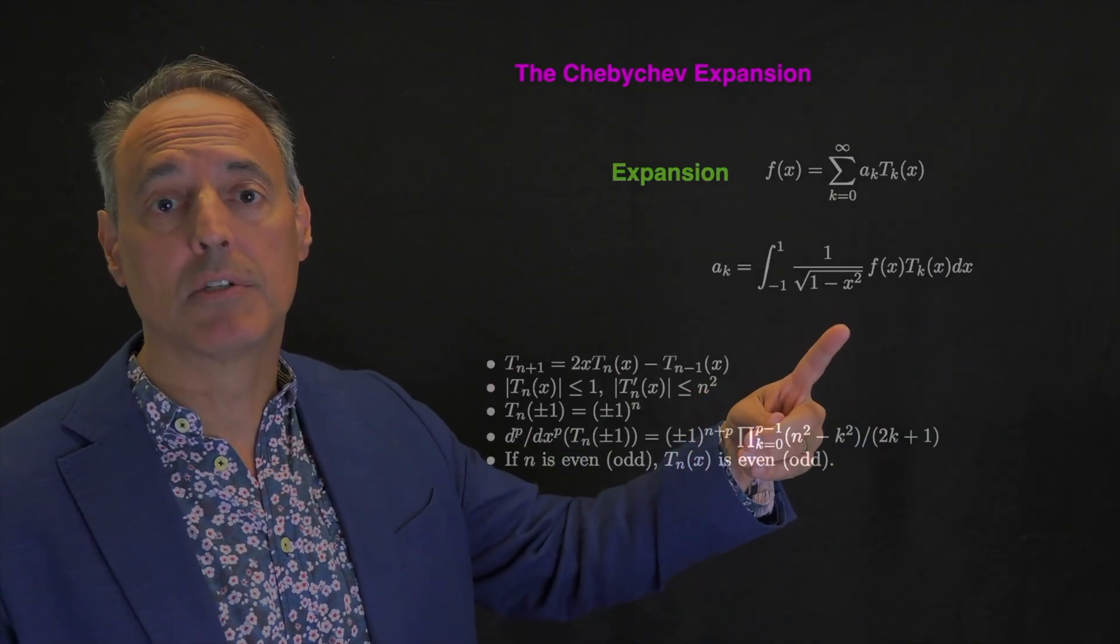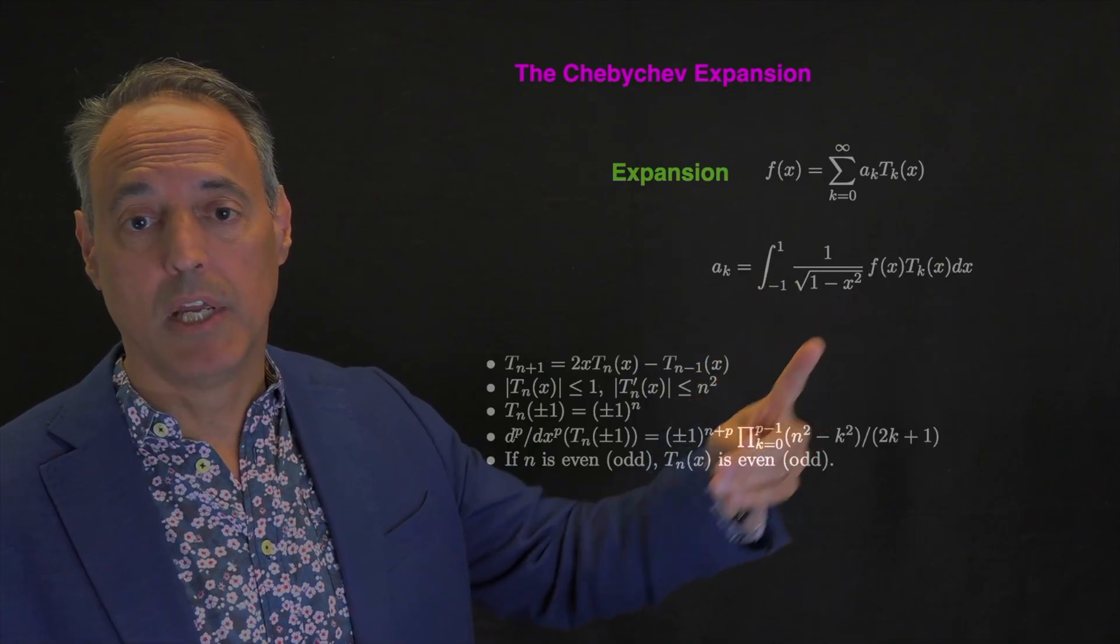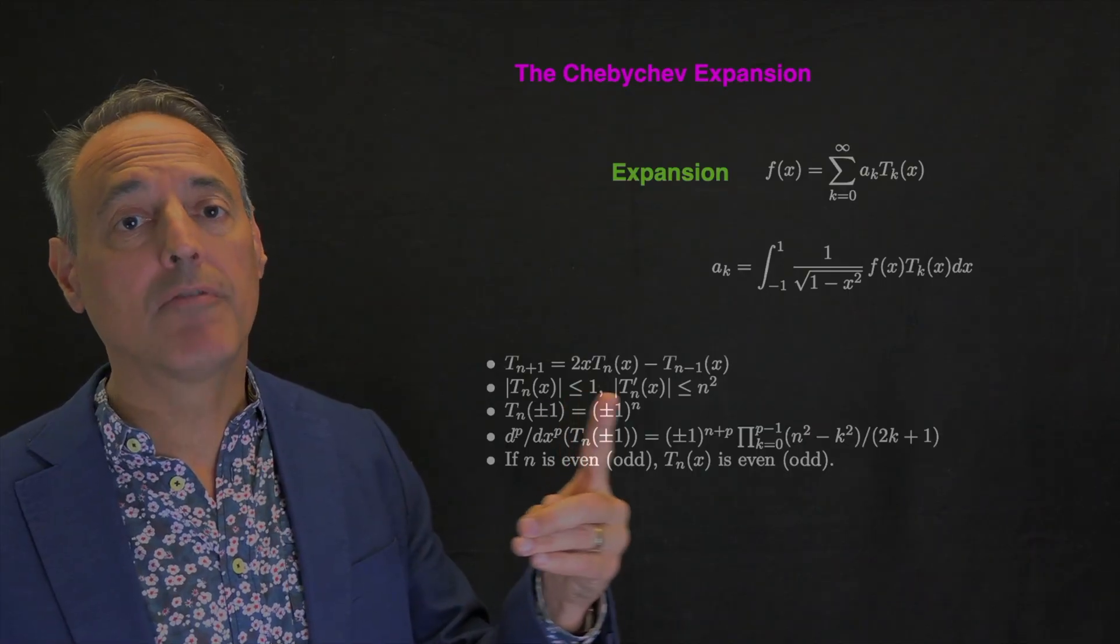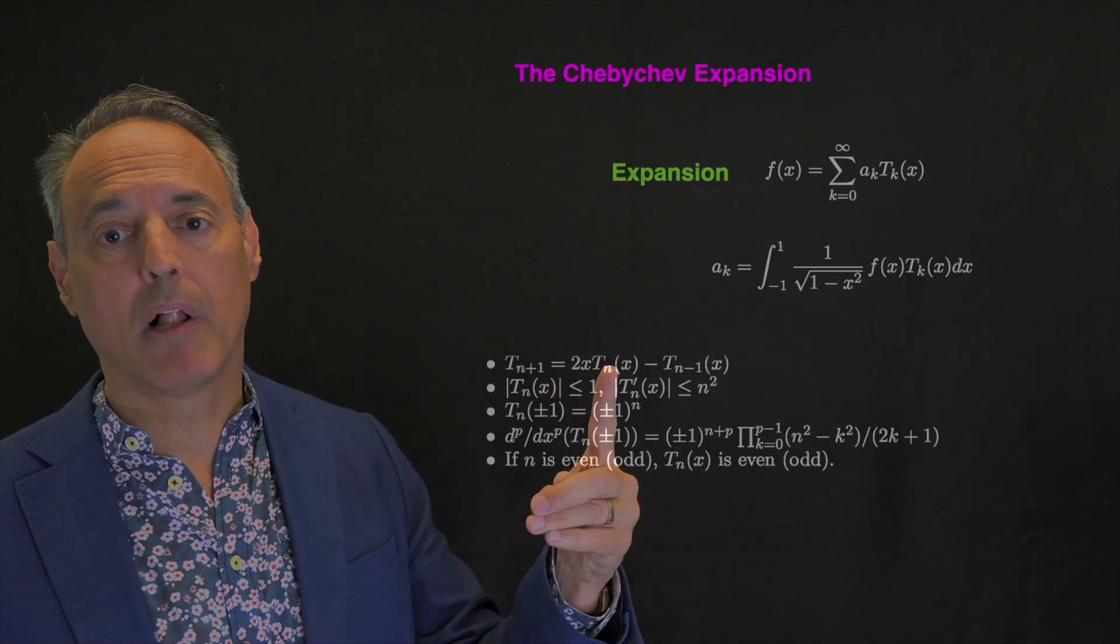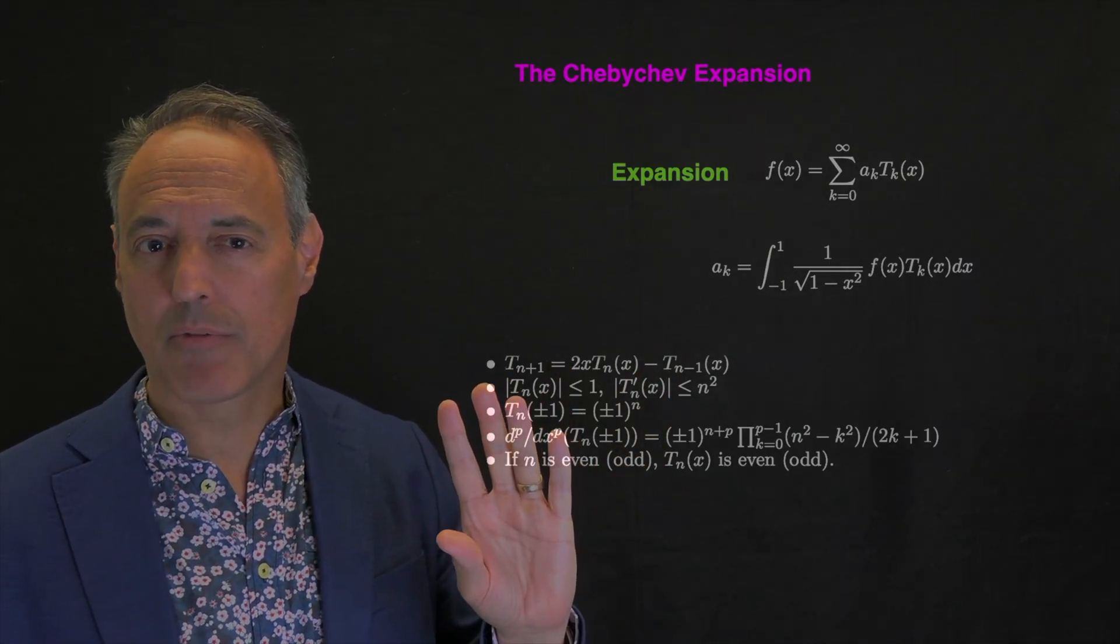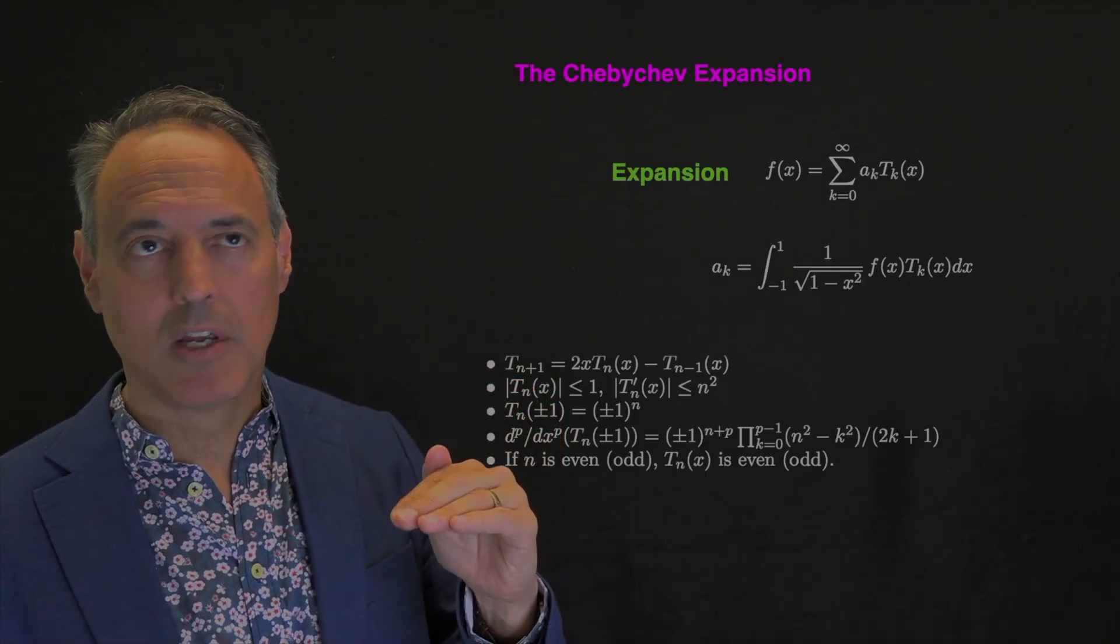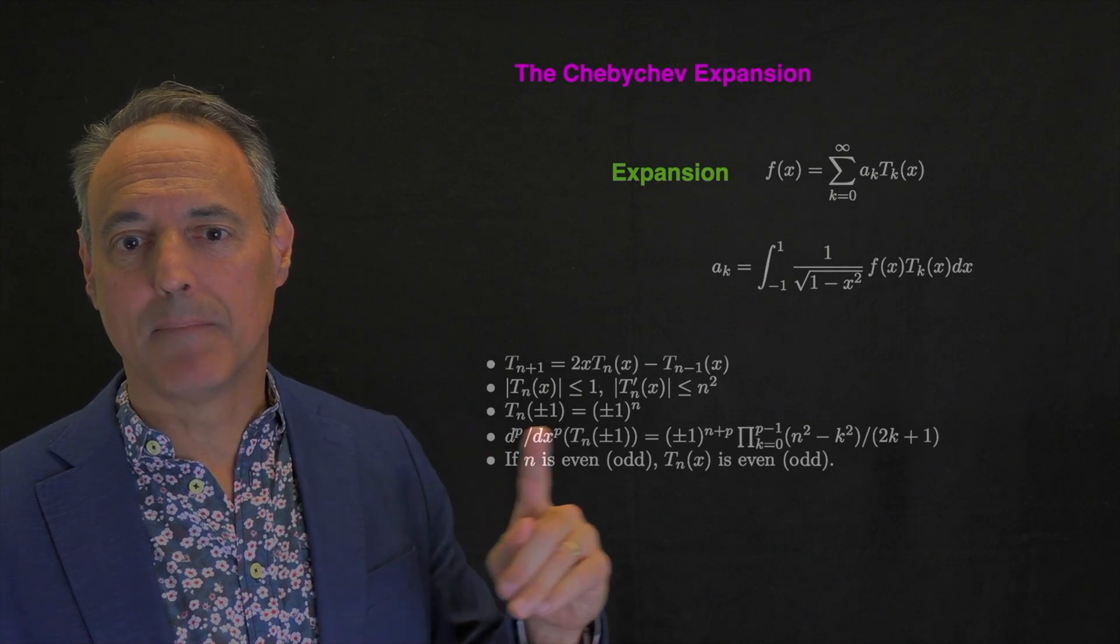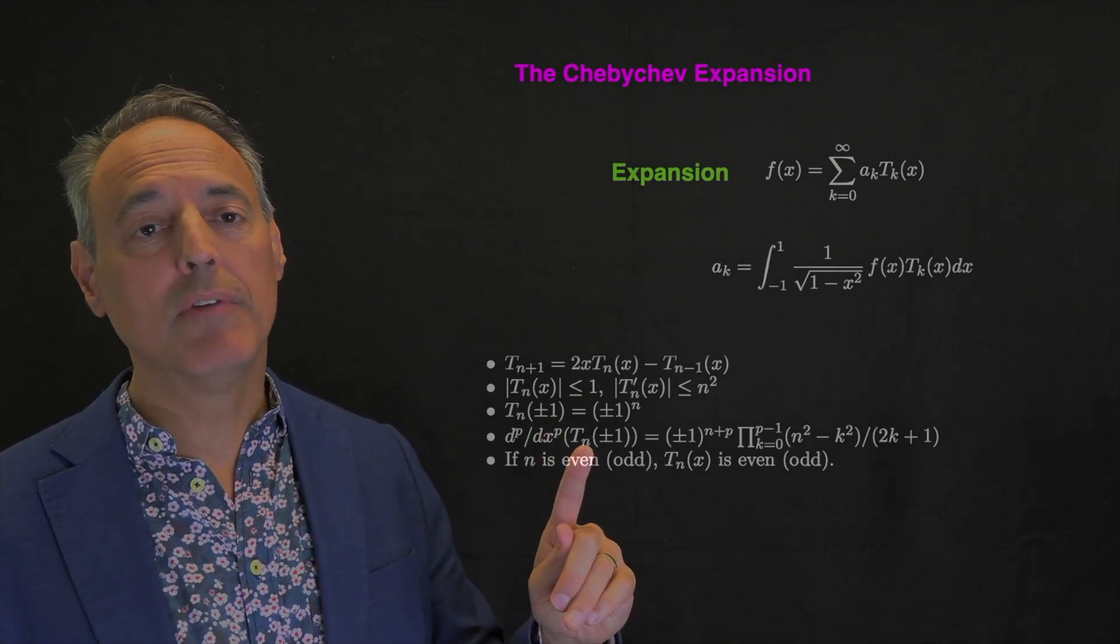I can do this in n log n time by using the cosine transform. Here are useful properties. We have a bounded function and relationships among lower polynomials to higher polynomials, much like what happened with Fourier transform. The lower frequencies squared become higher frequencies. We also have boundary conditions for these and this derivative relationship.